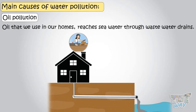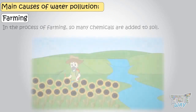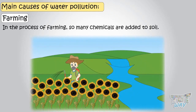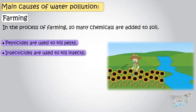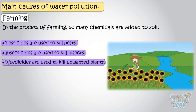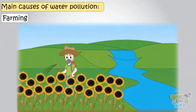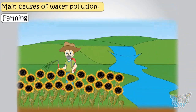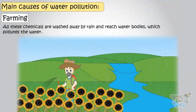Another source of water pollution is farming. In the process of farming, so many chemicals are used — pesticides to kill pests, insecticides for killing insects, weedicides to kill unwanted plants, and fertilizers to make the soil more fertile. All these chemicals ultimately reach the groundwater and pollute it. Some are also washed away by rain and reach water bodies, thus polluting the water.